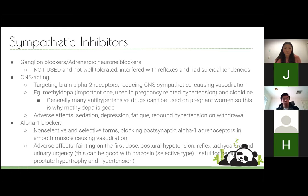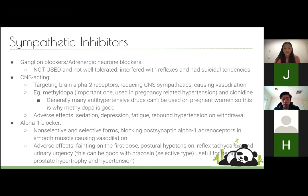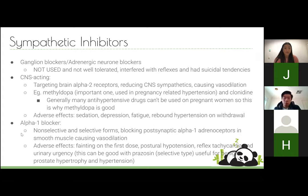Sympathetic inhibitors include ganglion blockers, centrally acting agents, and alpha-1 blockers. The important one is methyldopa, which came up in exams. Methyldopa is used in pregnant women with hypertension because other antihypertensives are contraindicated in pregnancy. It can cause sedation, depression, and fatigue, so it's not generally first line for anyone else.